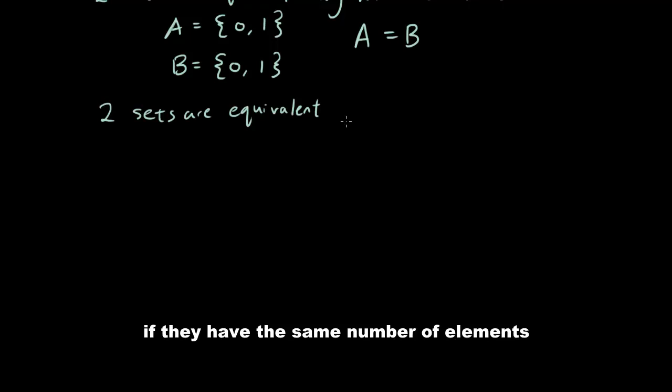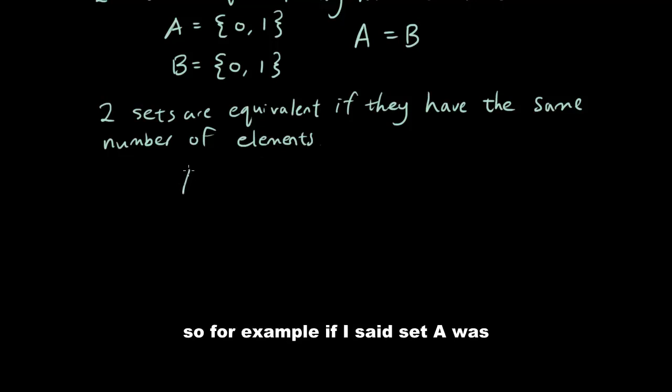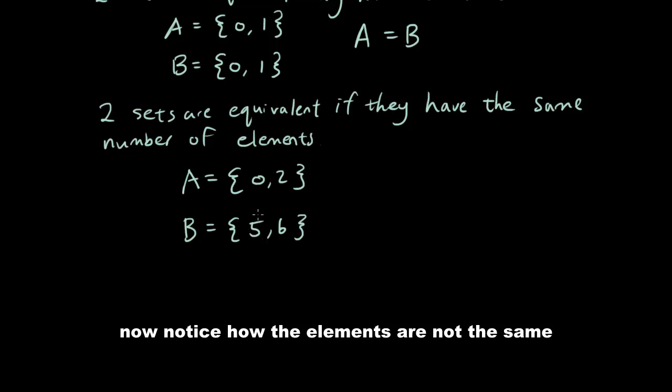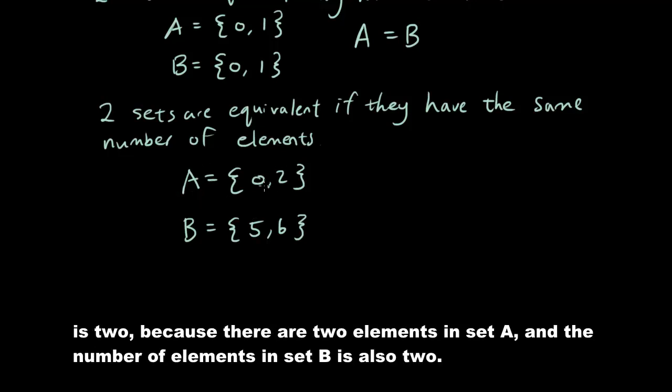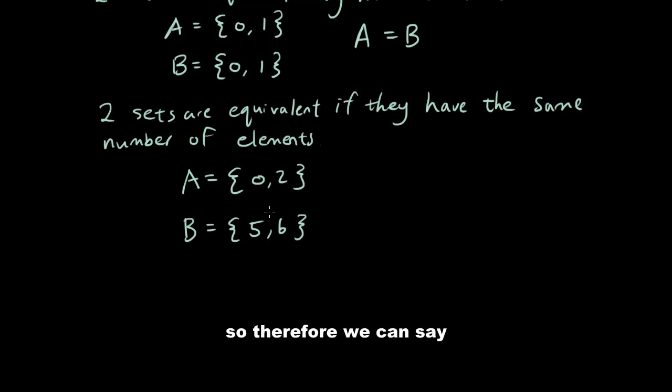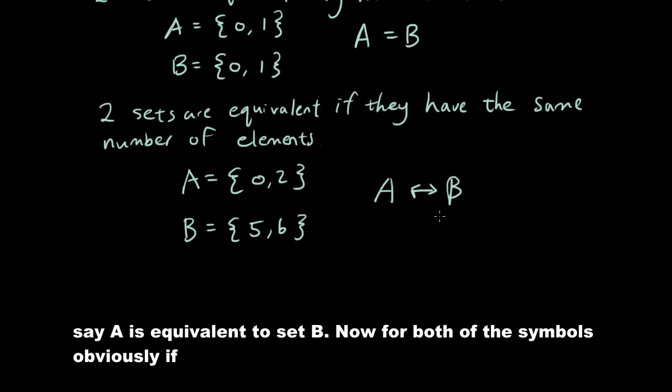Two sets are equivalent if they have the same number of elements. For example, if set A = {0, 2} but set B = {5, 6}, notice how the elements are not the same. However, the number of elements in set A is 2 and the number of elements in set B is also 2. Therefore we can say set A is equivalent to set B.